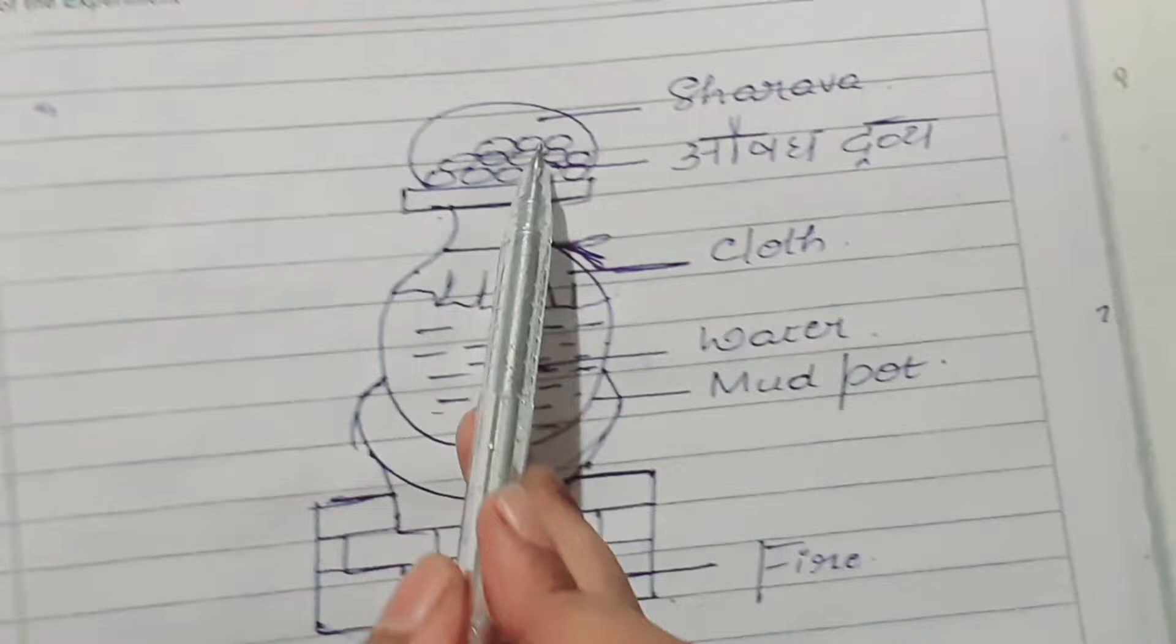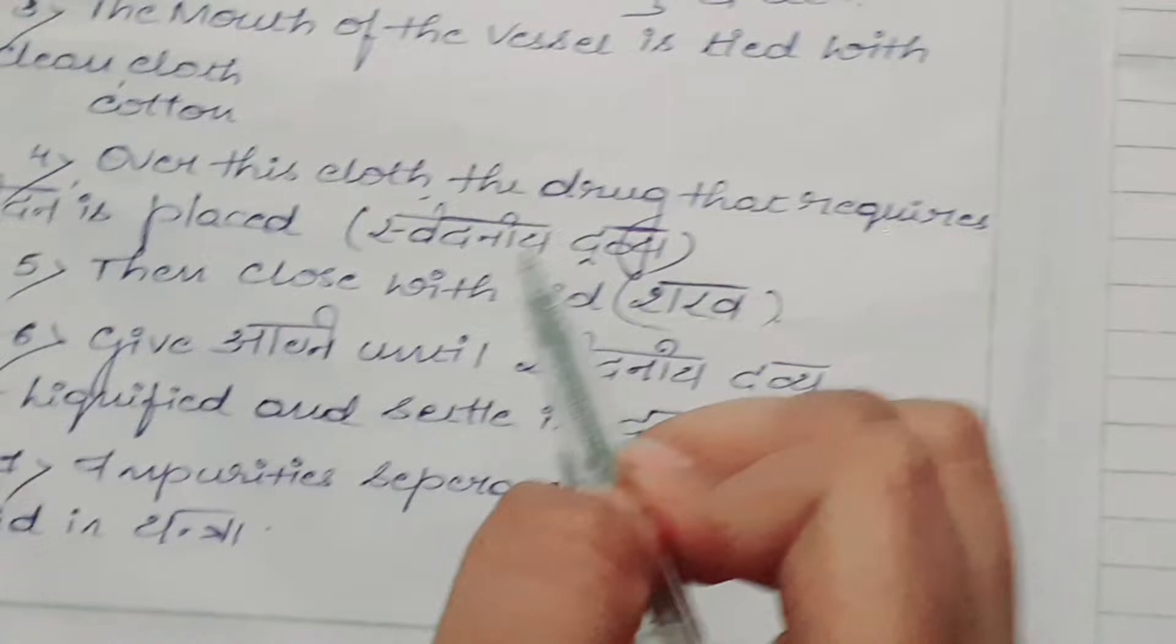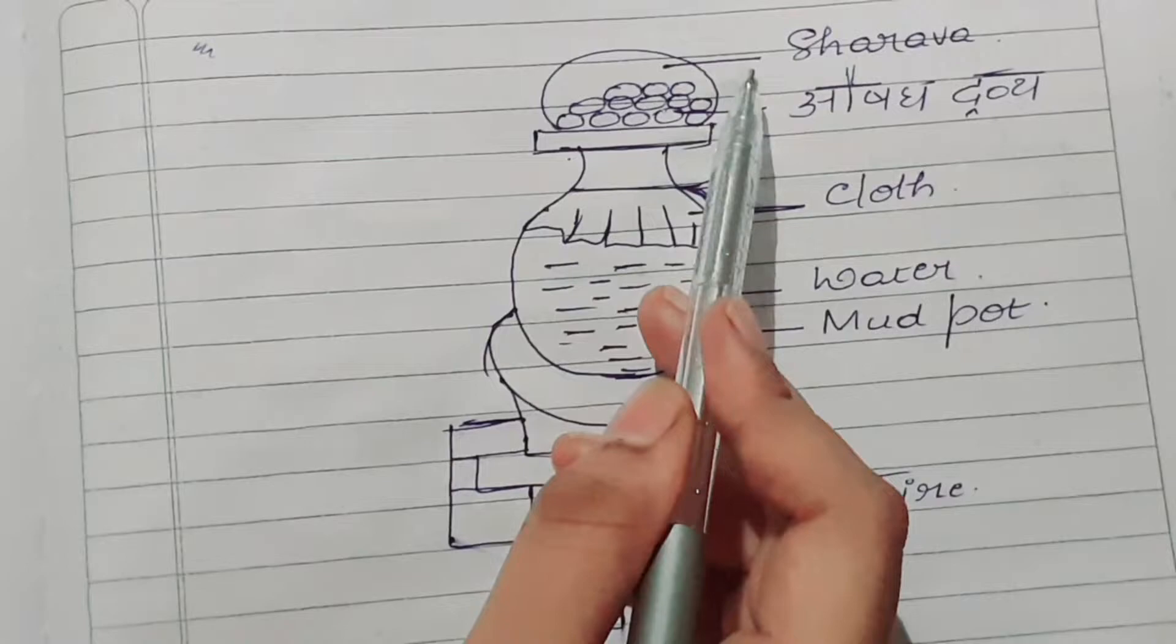Give agni until Swedaniya dravya gets liquefied and gets settled in the dravadravya. Impurity is separated and falls in the liquid in the yantra.